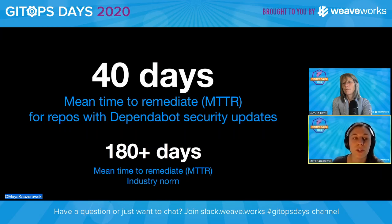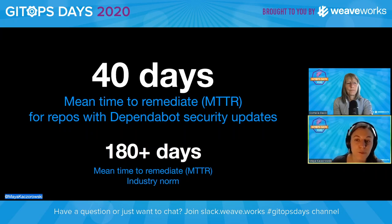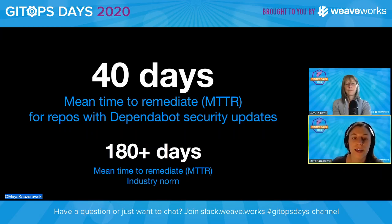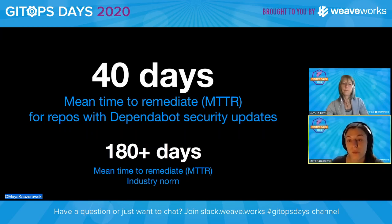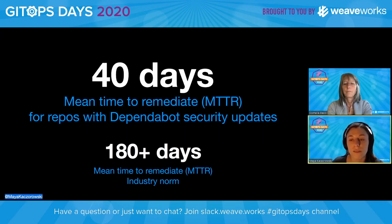Dependabot is triggered automatically when you add a new dependency to your environment or a new vulnerability is discovered in an existing dependency. These updates are on by default for public repos. For repos that have Dependabot security updates enabled, the mean time to remediate — MTTR — is only 40 days. I have to compare to industry metrics here: Sonatype says MTTR on a project on average is 180 days, and Snyk finds this for open source projects to be more than two years. Getting that key metric down to 40 days is a huge improvement. By using GitOps to declare your dependencies, you can automate their security.